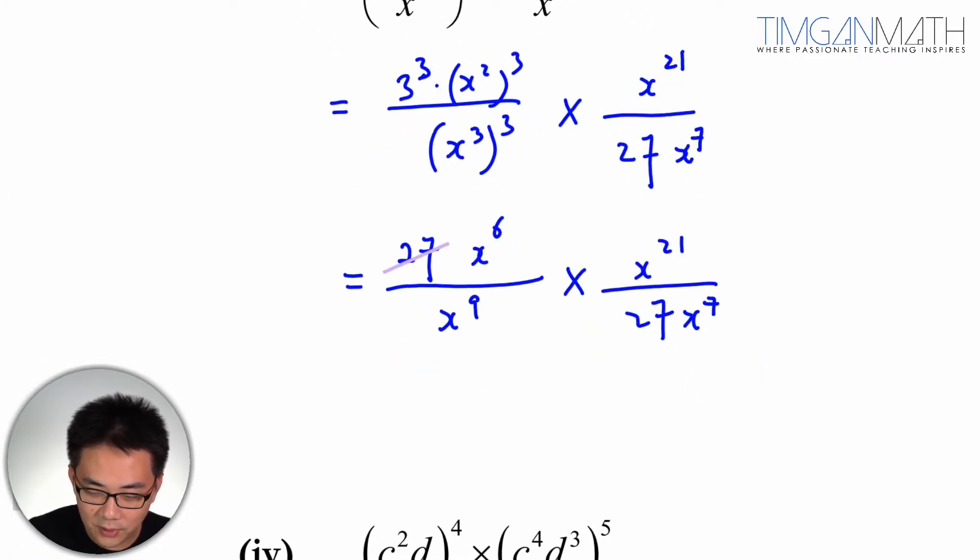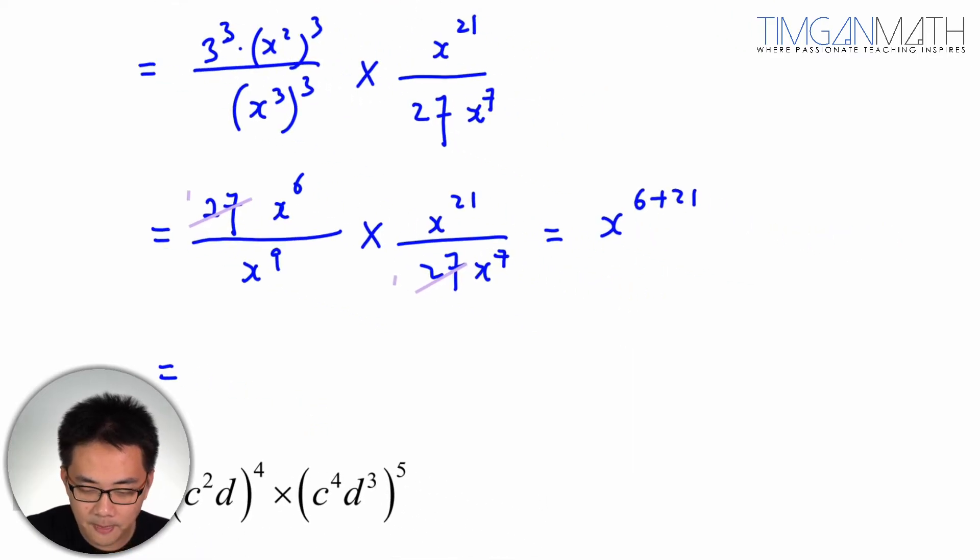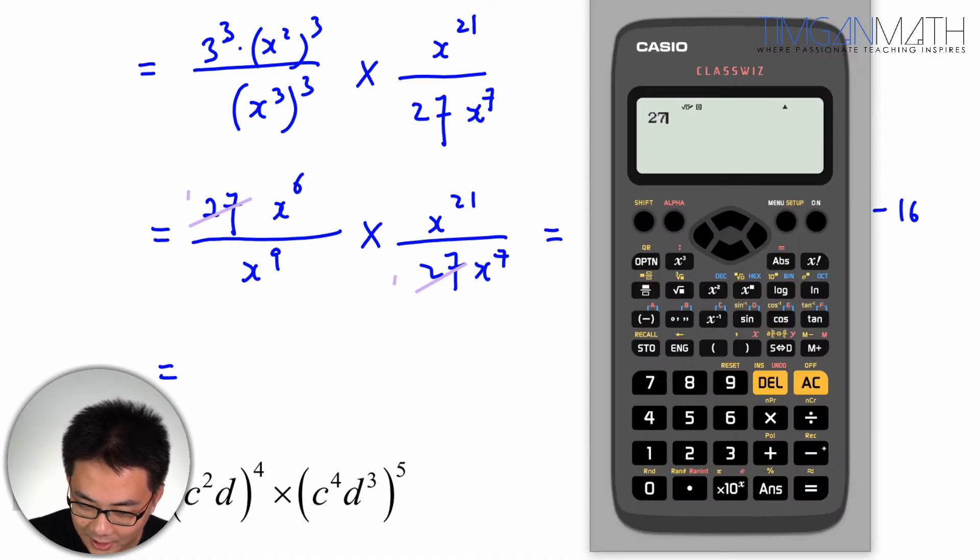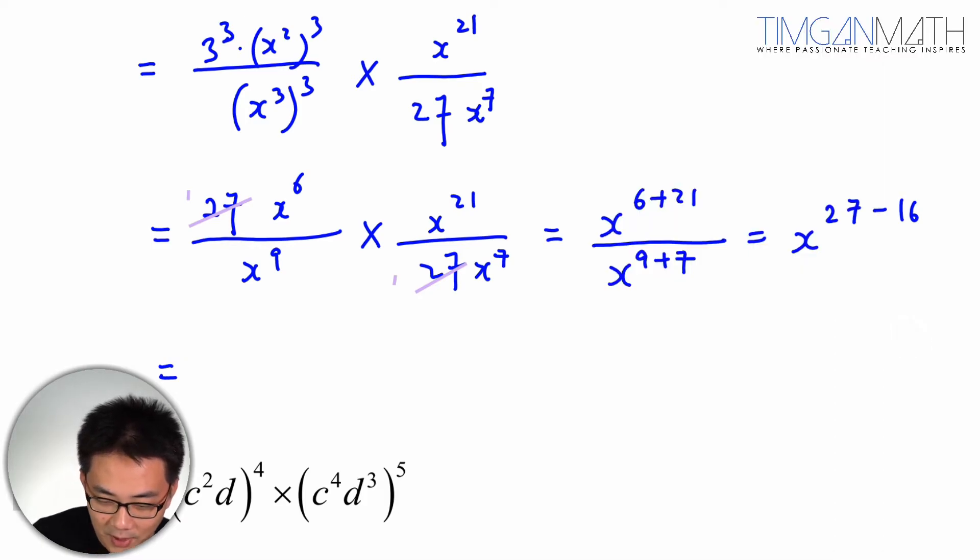So this case here, 27, 27 will cancel away, and it will give us 1. Then after which we're going to get 26. So what we can do is, first let me put it x to the power 6 plus 21, because it's plus 21. Then this is x to the power 9 plus 7 for the bottom one. And actually you could just minus it straight. So x to the power 6 plus 21 is x to the power 27 minus, bottom would be 16. So 27 minus 16 would give us 11. So x to power 11.